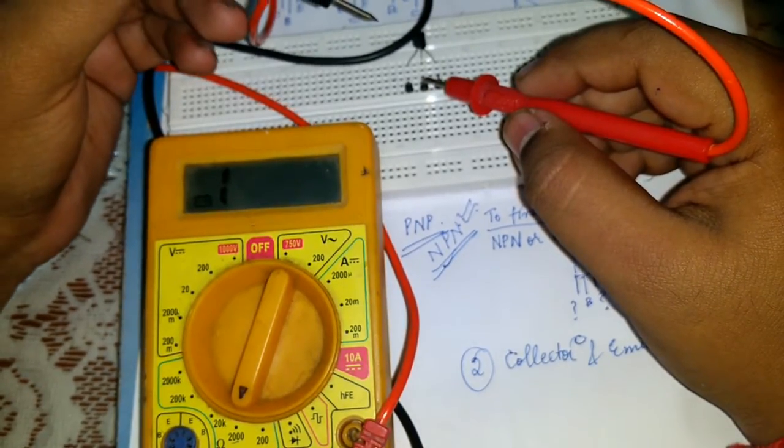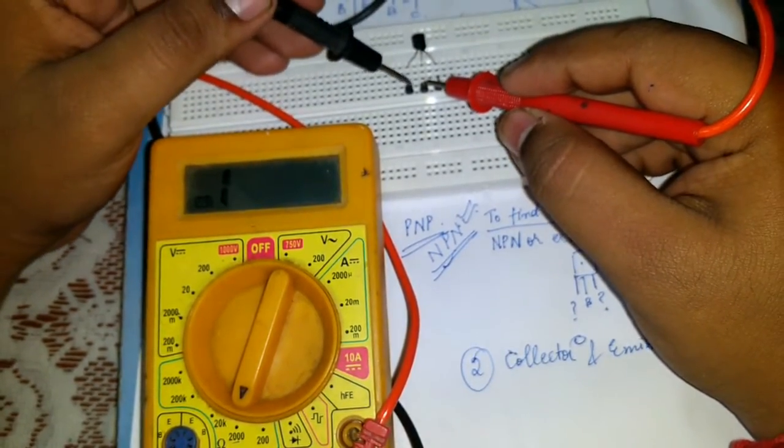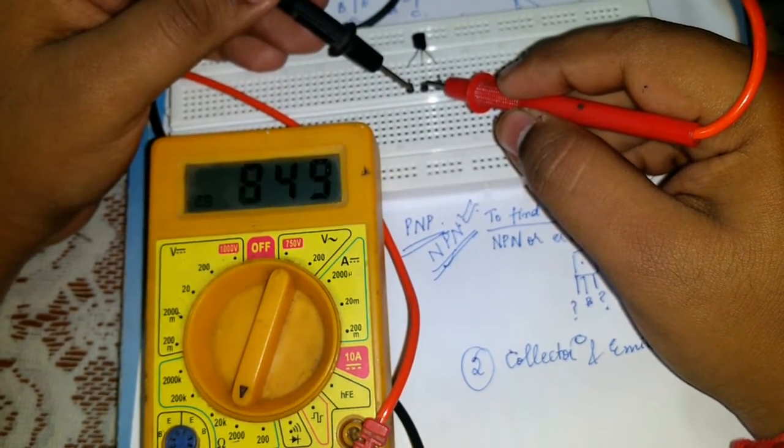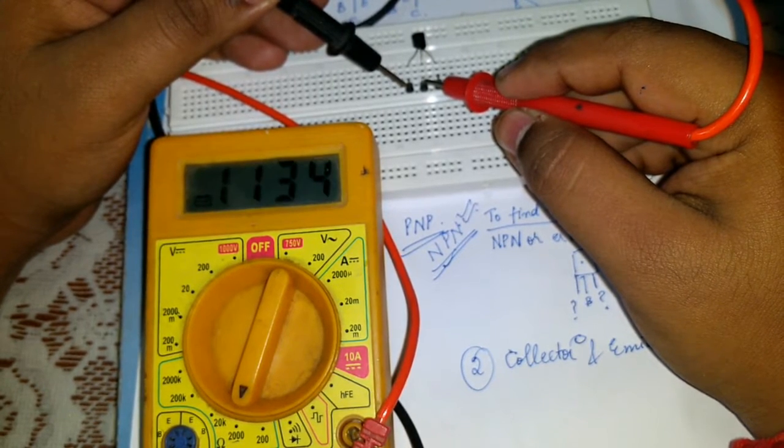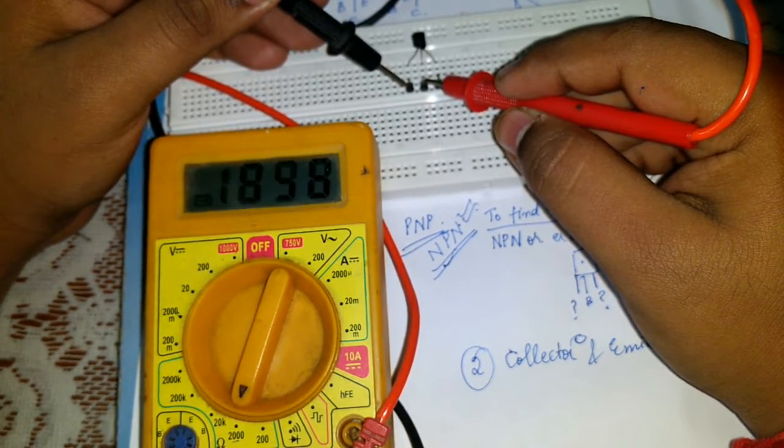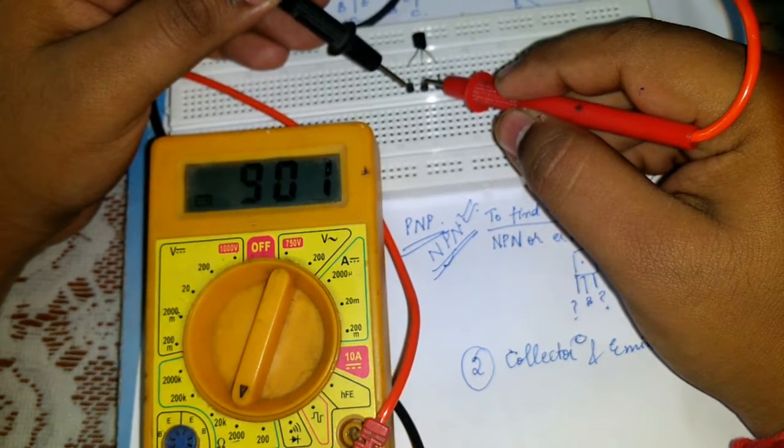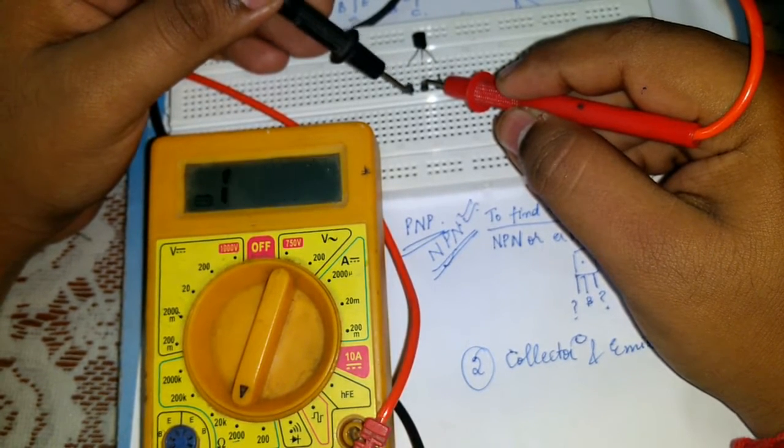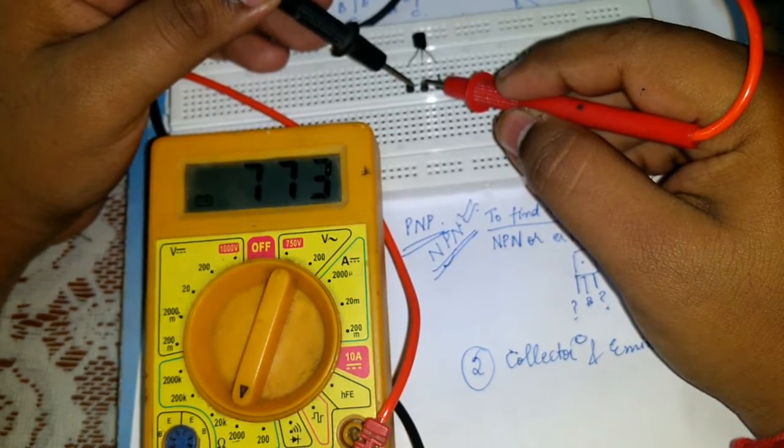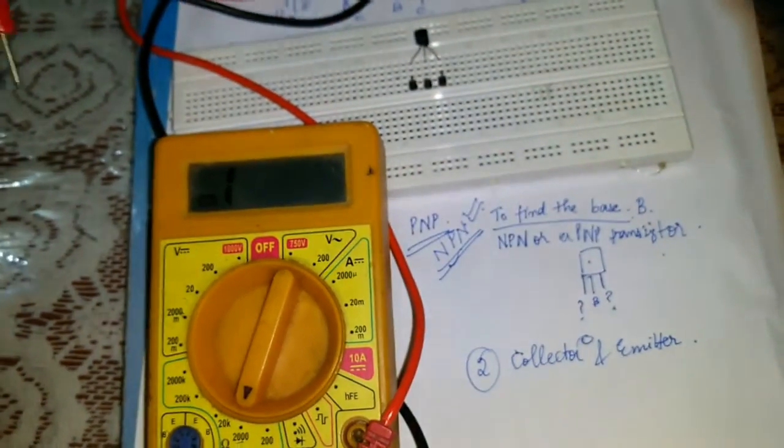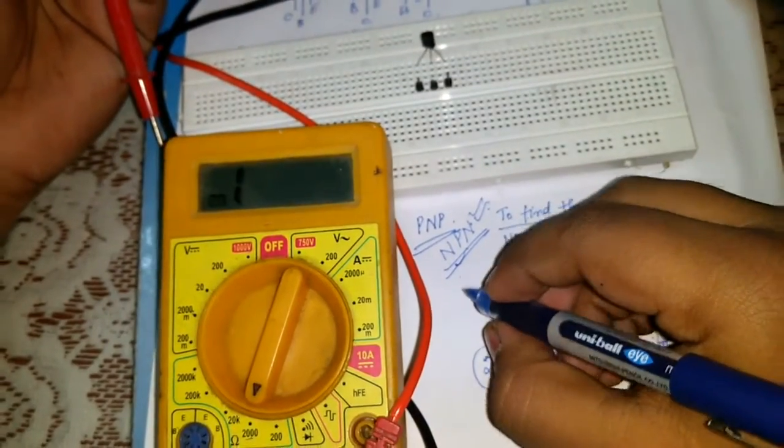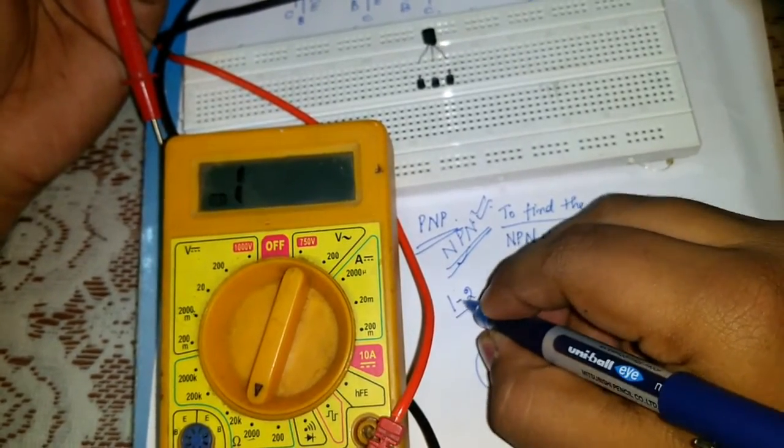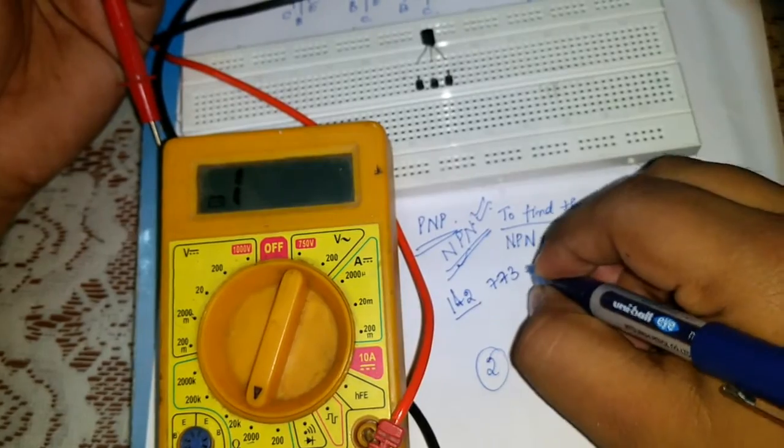Keeping this, I will keep this black pin in pin number one and measure its resistance. It's coming out to be 773 ohms. That means resistance between pin one and two is 773 ohms.